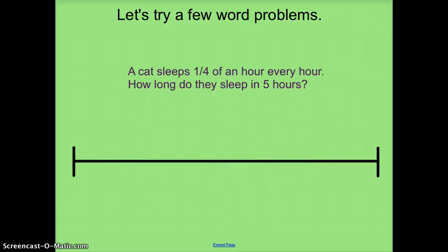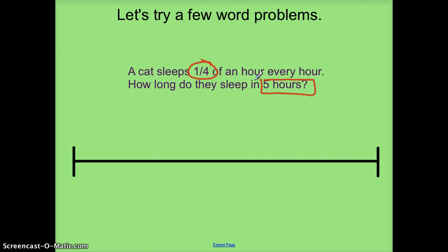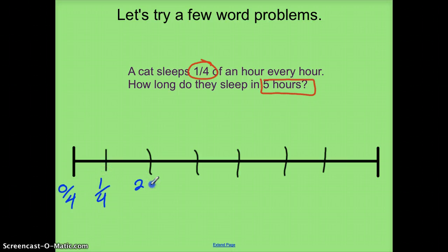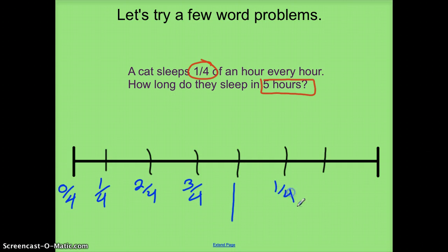Here's another: a cat sleeps one-fourth of an hour every hour. How long do they sleep in five hours? I need to show five hours, so I'll make sure I have more than five marks — drawing zero through seven. Since they're sleeping a fourth of an hour each time, I'll start at zero-fourths and increase by one-fourth each tick mark: one-fourth, two-fourths, three-fourths, then one whole instead of four-fourths, then one-and-one-fourth, one-and-two-fourths, one-and-three-fourths.